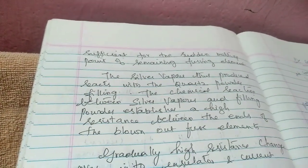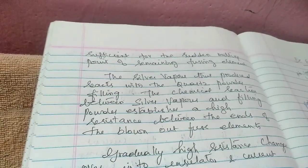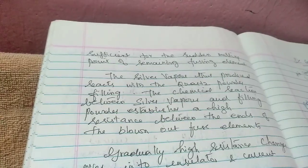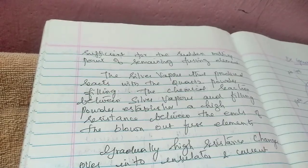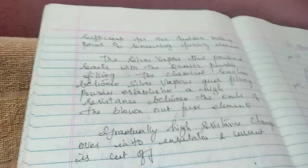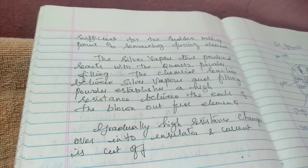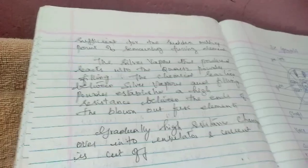The silver vapor that is produced will react with the quartz powder and there would be a chemical reaction between the silver vapor and the filling powder. It will produce a very high resistance between the ends of the blown out fuse element. Gradually this high resistance changes into an insulator and current is cut off.